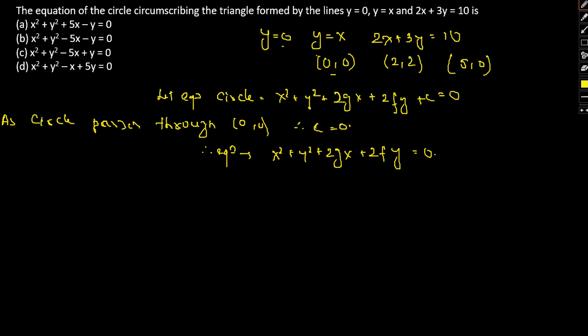If we put (5,0) in this equation, we have 25 + 10g = 0, which gives g = -5/2.